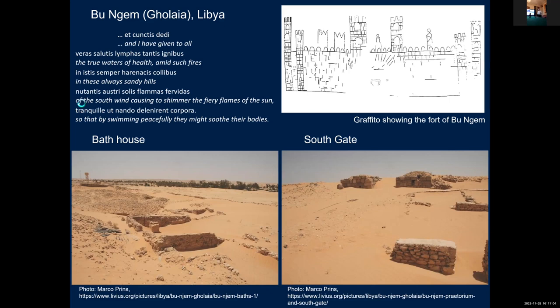Adams says the Latinity of Avidius's poem is a mixture of the literary and the substandard, yet it contains arresting phrases that well capture how welcome the bath house must have been to the soldiers of the Third Legion stationed in the northern Sahara in the AD 220s. The poem reads: 'I have given to all the true waters of health, the midsummer fires in these always sandy hills, of the south wind which makes shimmer the fiery flames of the sun, so that they might soothe their bodies by peacefully swimming.'